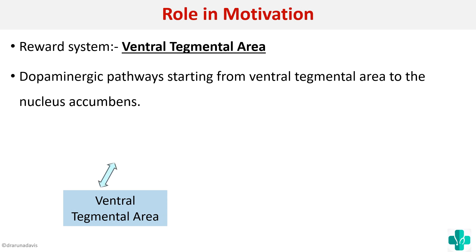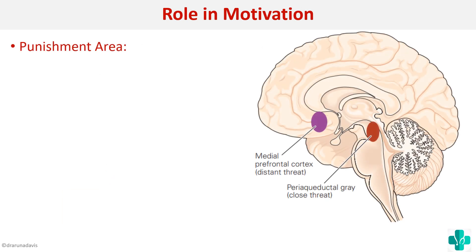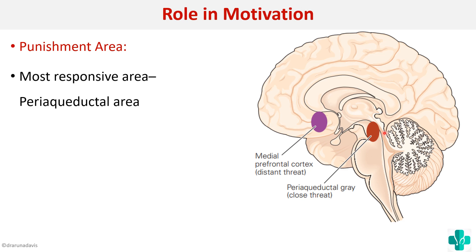From the ventral tegmental area through the nucleus accumbens, information reaches the thalamus, then the prefrontal cortex, and finally the amygdala, with interconnections throughout this loop causing motivation. Since there is a reward system, there is also a punishment system — the major one is the periaqueductal gray area. Stimulation of this area will cause fear.